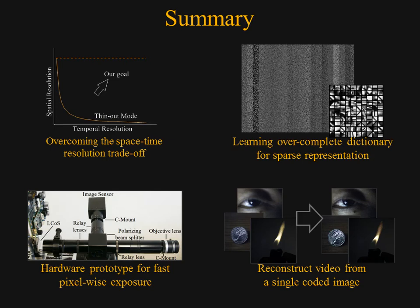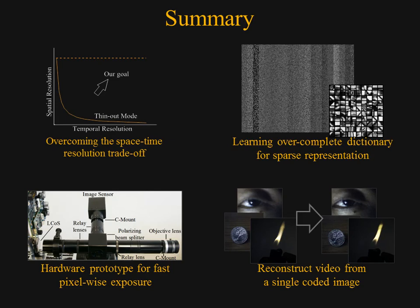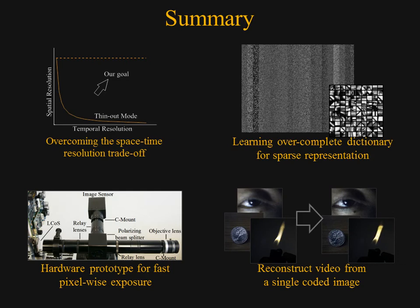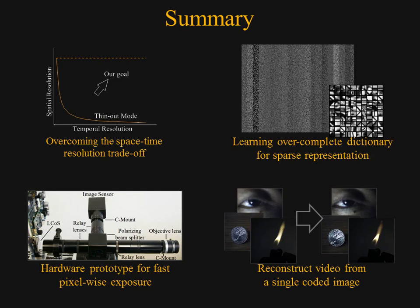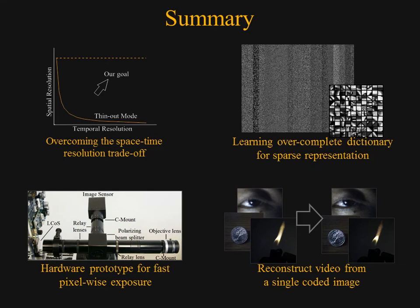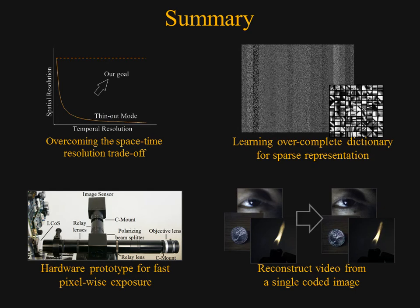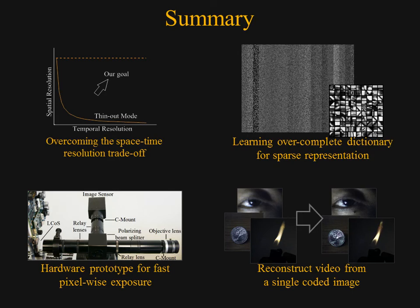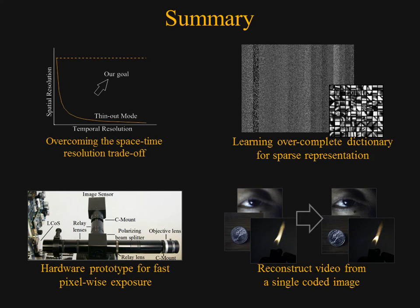In summary, we proposed techniques for sampling, representing, and reconstructing space-time volumes for overcoming the spatio-temporal resolution trade-off. We have built a hardware prototype for simulating fast per-pixel shutter. We demonstrated the performance of our techniques through simulations and real experiments on a variety of challenging scenes, including fluid and flame motion, occlusions, and muscle deformations.